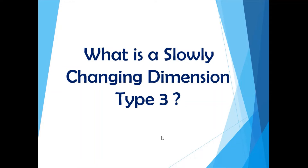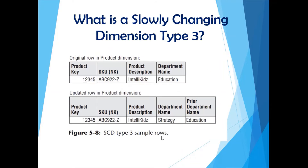What is the slowly changing dimension type 3? A type 3 is a more complex solution. You add another column to the table called 'prior department name.' So the prior department name stores 'Education' and the current department name becomes 'Strategy.'